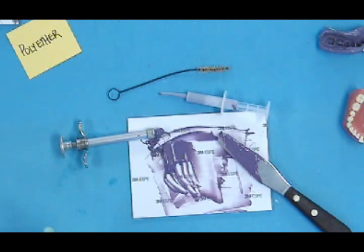And this is the type of material you might see in your office. On page 256 in your textbook, there's a machine called an automix, and you basically have two large tubes of the polyether inside the machine.